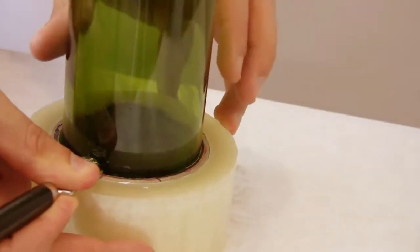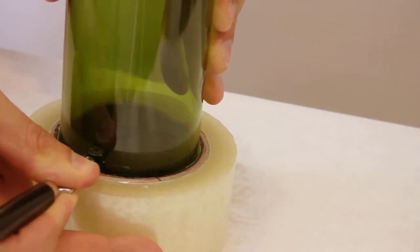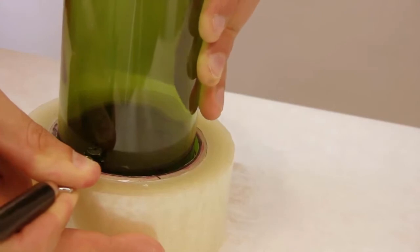Push your glass cutter down and lightly towards the bottle. Now rotate the bottle until both ends of the line meet.